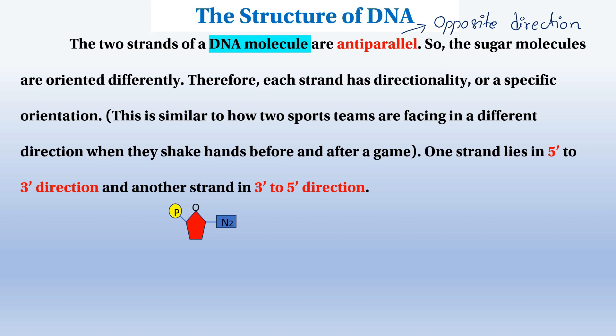Each nucleotide consists of a sugar and a nitrogen base — adenine, guanine, cytosine, or thymine. There are four types of nitrogen bases.